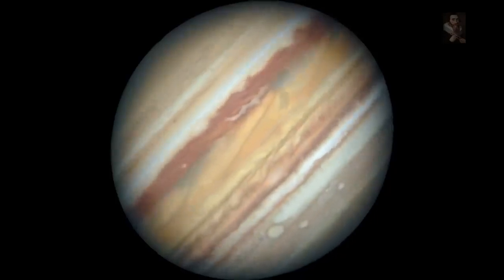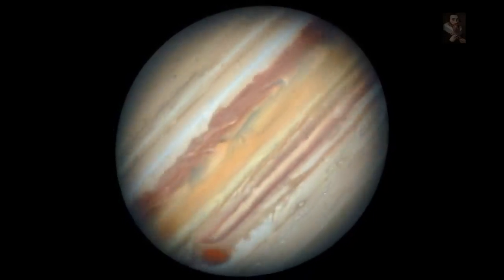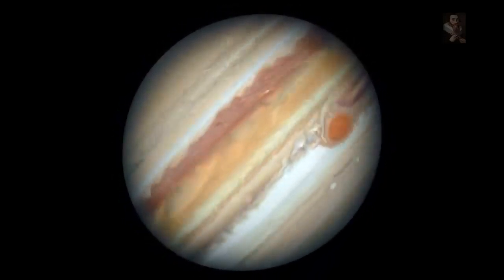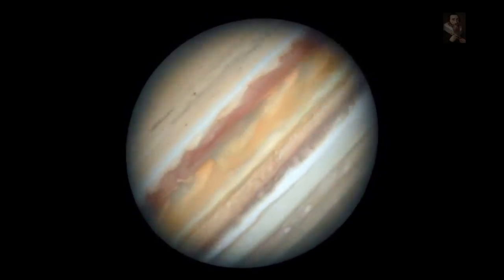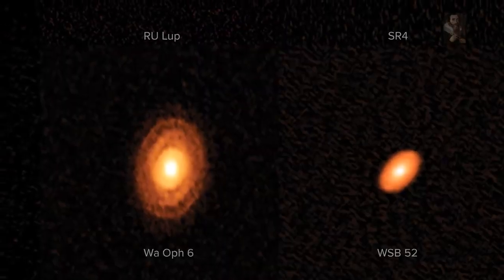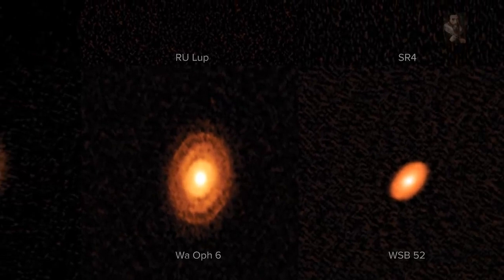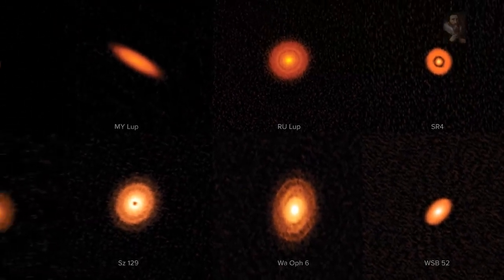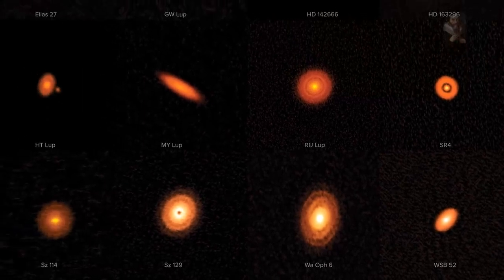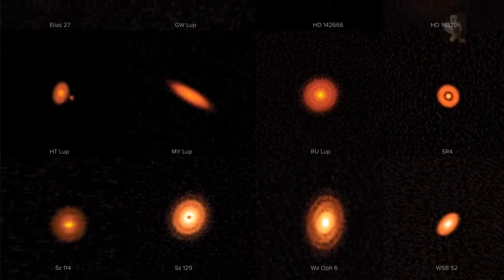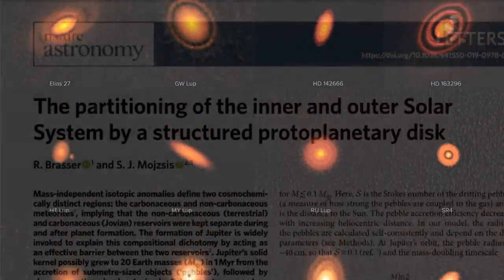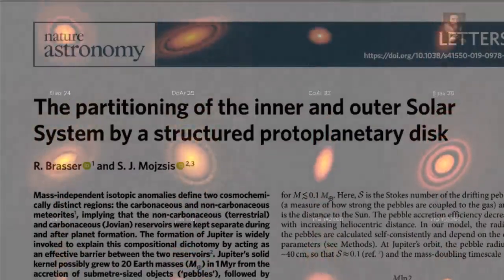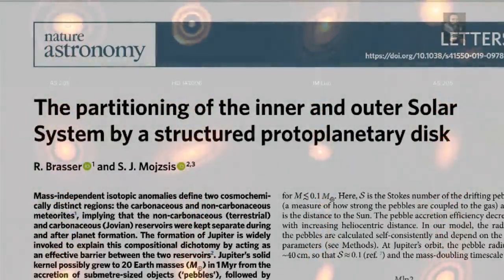Ultimately, their work suggests a need for a fundamental rethink of Jupiter's role in the solar system's characteristic distribution of carbon. With the diversity of observations of circumstellar disks gathered by ALMA, they could also help astronomers to learn more about the formation of star systems other than our own. You can read the research in the journal Nature Astronomy, which we will link below for your viewing pleasure.